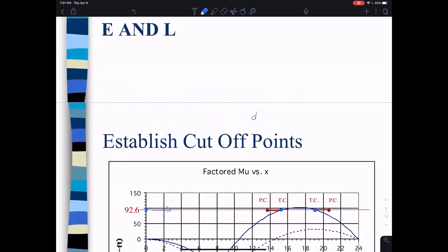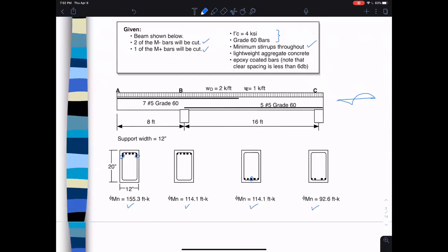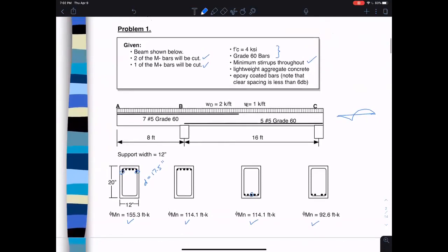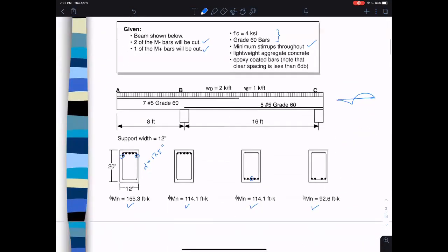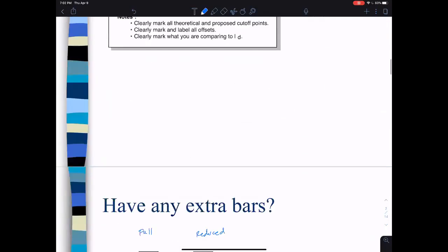Then I calculated d and 12 bar diameters, whichever was greater. D was 17.5 inches. These are grade 60 bars - seven number five bars. The diameter of a number five is five-eighths, so 12 times five-eighths equals something less than 17.5. So d is bigger than 12 bar diameters. We need 17.5 inches.